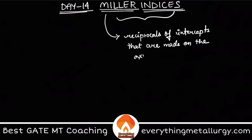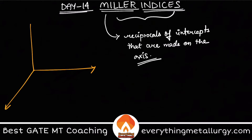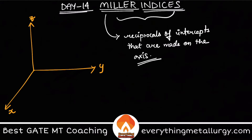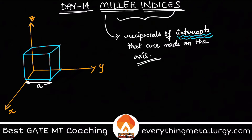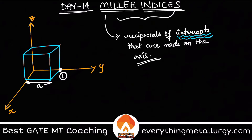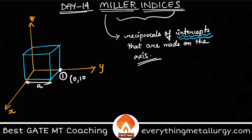Now what is this intercept? We usually talk about 3D space, so we have x, y, z axes. Let's assume I have a unit cell with lattice parameter 'a'. Now let's say I have a point somewhere — how can I represent a point in 3D space? We can easily do it by representing in terms of vectors x, y, z. For example, this point is nothing but coordinates 0, 1, 0.